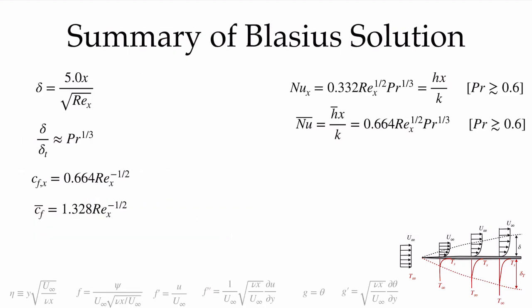To summarize: the hydrodynamic solution gives the boundary layer thickness at any x location, the relationship between momentum and thermal boundary layer thicknesses, the local and average skin friction coefficients, and the u and v velocity components everywhere. From the energy equation, we obtained the local Nusselt number, the local convection coefficient, and its average over any plate length.